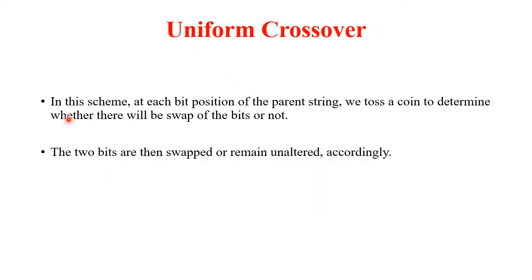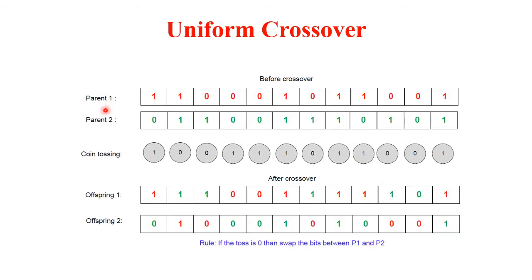In uniform crossover, at each bit position of the parent string, we toss a coin to determine whether there will be a swap of bits or not. At each bit position, we decide whether to take from the first or second parent based on the coin toss outcome. The rule here is: if the toss is 0, swap the bits between P1 and P2.